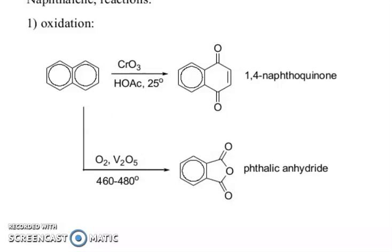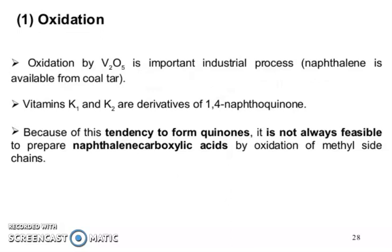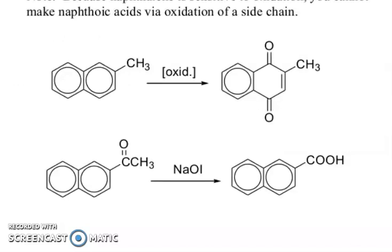Reactions of naphthalene. Oxidation in the presence of chromium oxide gives 1,4-naphthoquinone. Oxidation in the presence of oxygen and vanadium pentoxide gives phthalic anhydride. Oxidation by vanadium pentoxide is important in the industrial process. Naphthalene is available from coal tar. Vitamin K1 and K2 are derivatives of 1,4-naphthoquinone.